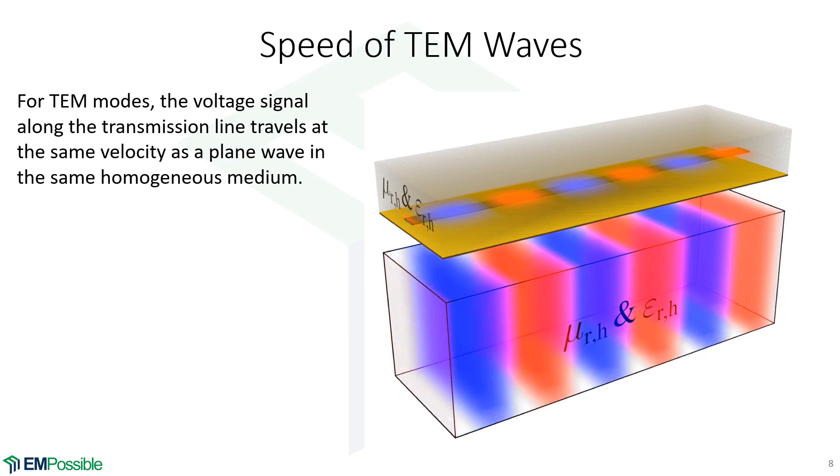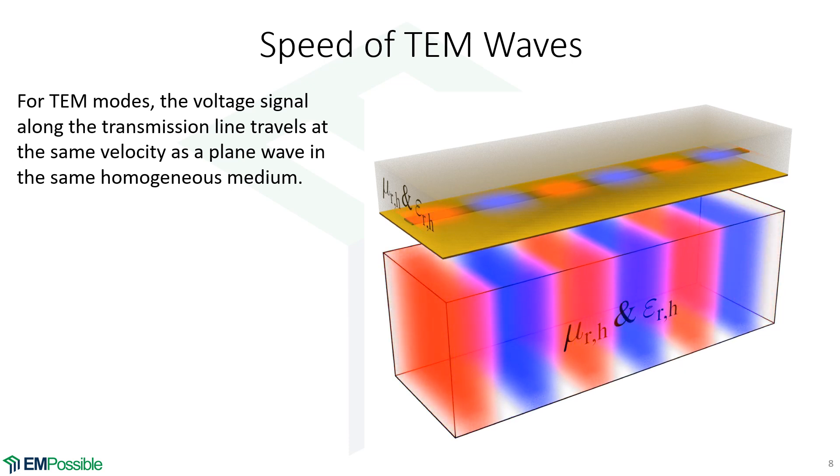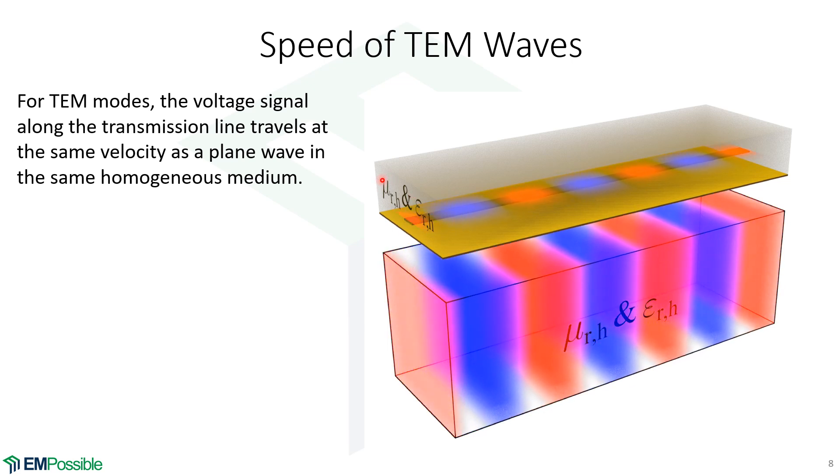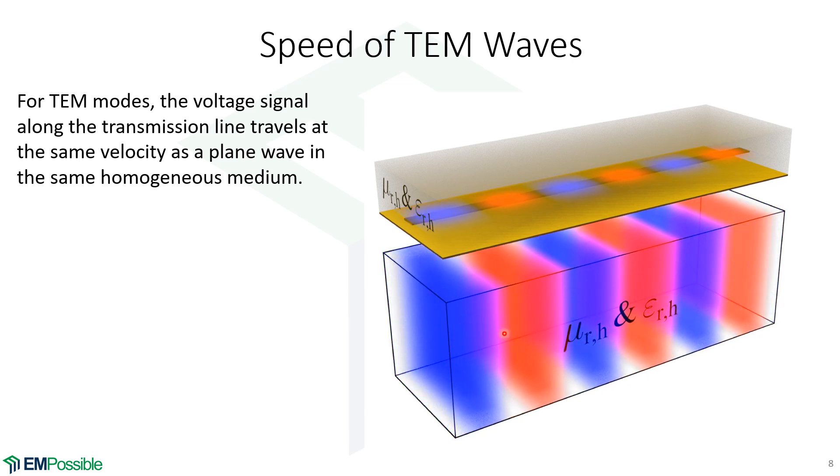A few minutes ago, we had this conclusion that beta equals K. So that means the phase constant of the signal on the line is equal to the wave number, which is really talking about the speed of a wave in a medium. And I'm illustrating what that means on the right. Here we have a microstrip transmission line embedded in a medium with some relative permeability and some relative permittivity, and that moves along the line at some velocity. Down here, I'm showing an electric wave, electromagnetic wave in this medium with these same properties. There's no metals now, just this infinite dielectric medium.